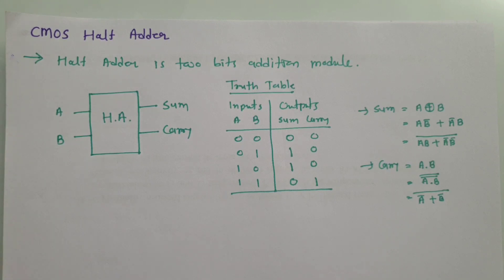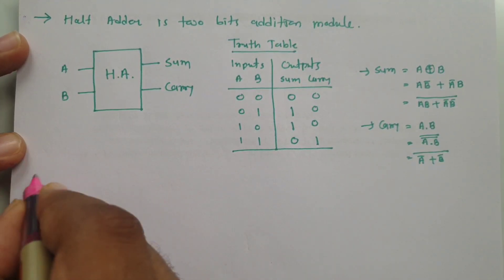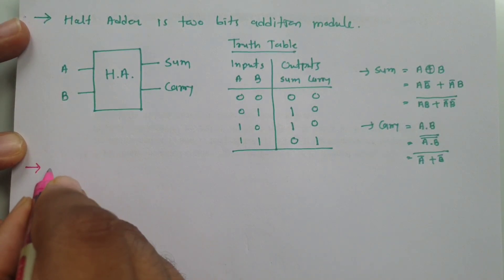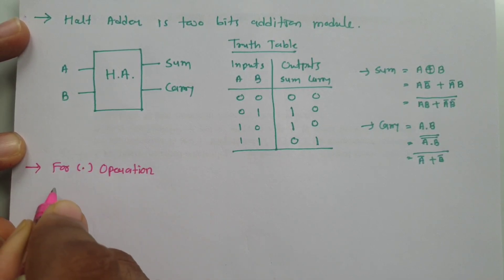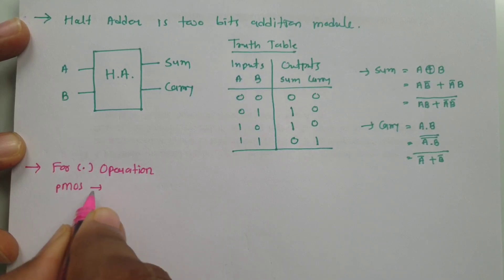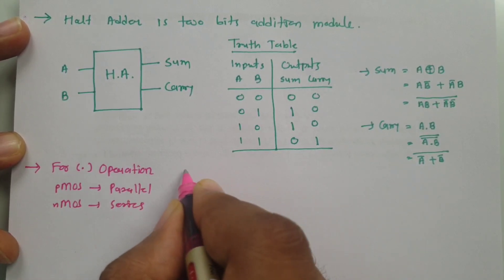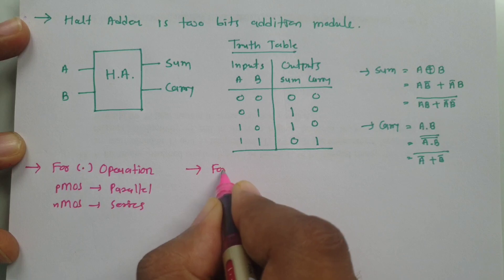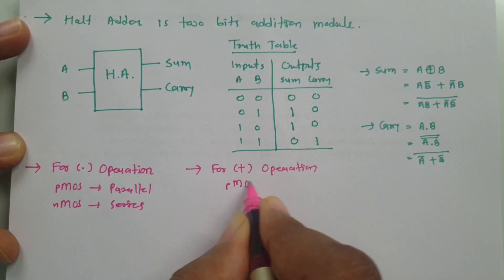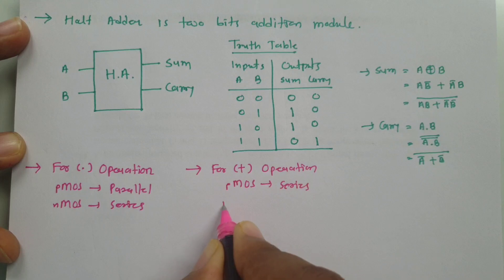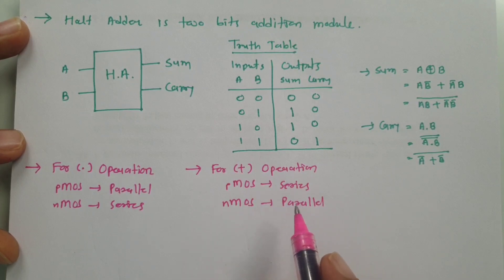In CMOS there are two basic rules. For dot (AND) operation: PMOS should be in parallel and NMOS should be in series. For plus (OR) operation: PMOS should be in series and NMOS should be in parallel. We need to follow these rules when forming the circuit.